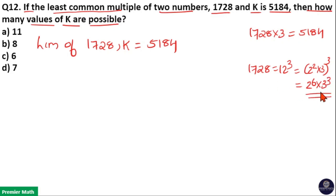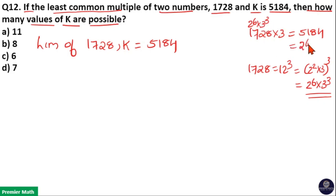If prime factors of 1728 are 2 raised to 6 and 3 cubed, then prime factors of 5184 are equal to 2 raised to 6 into 3 raised to 4. Because 3 cubed into 3 is 3 raised to 4.